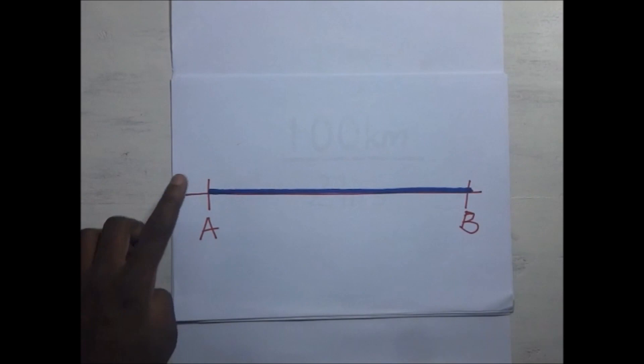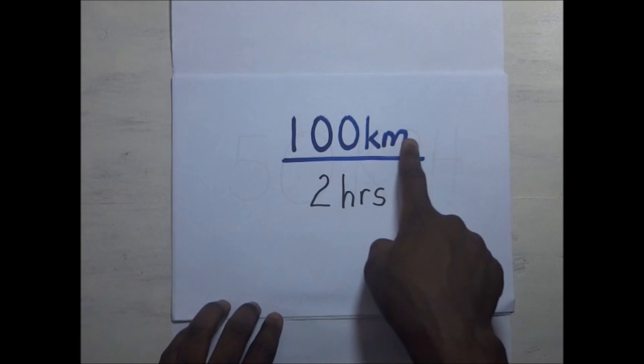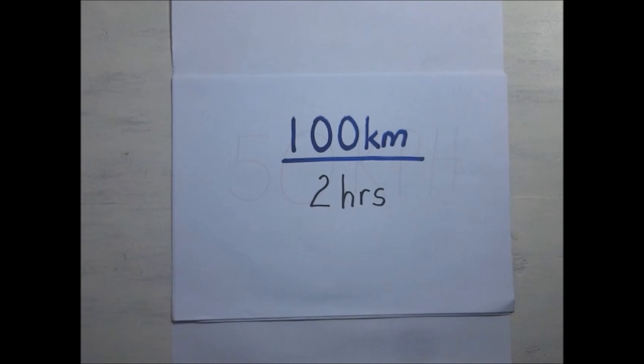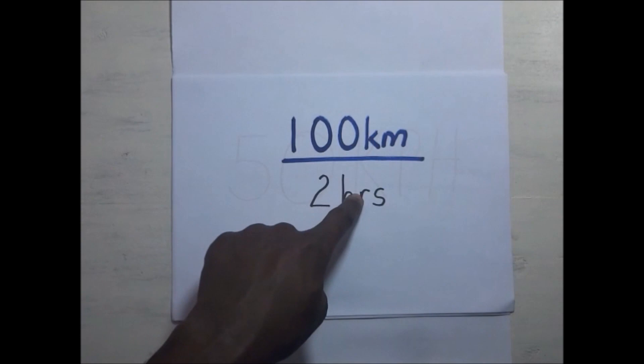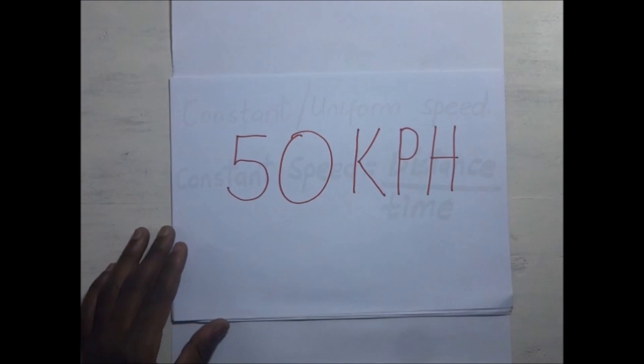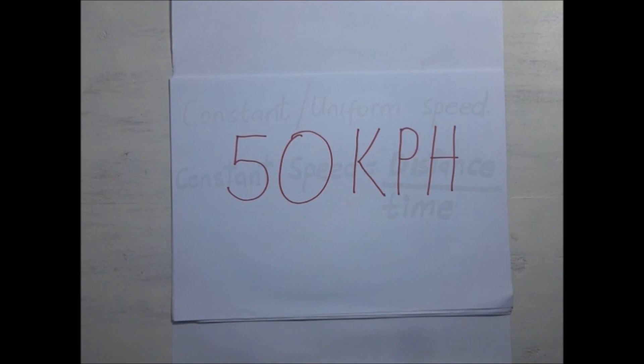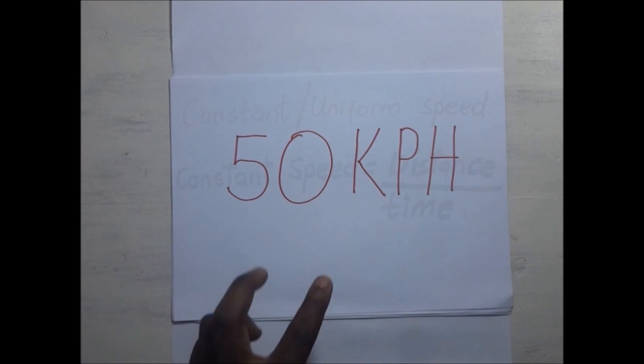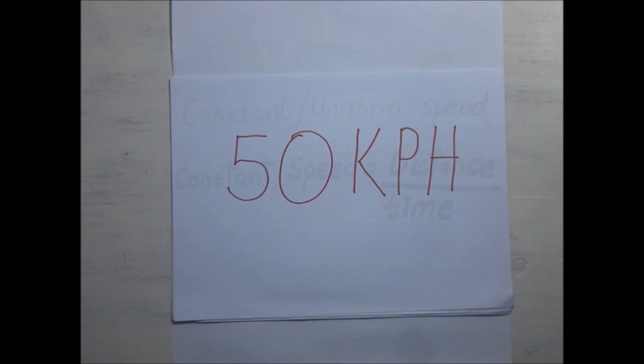To find the speed, we get the total distance covered from A to B and divide by the total time taken. So 100 kilometers divided by 2 hours gives us 50 kilometers per hour. This means that for every 1 hour it will be covering 50 kilometers — that is what we mean by 50 kilometers per hour, which is constant or uniform speed.